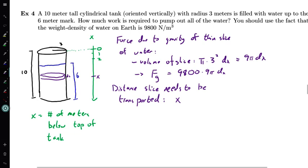So the work done on each slice is going to be the force times the distance. So since we know that this is going to be a constant force, the weight of the water doesn't change. And the distance that it needs to be transported is a given quantity. It's x. So the work done on each slice is going to be 9,800 times 9 pi times x dx.